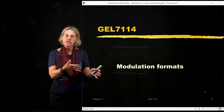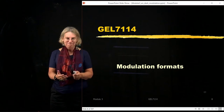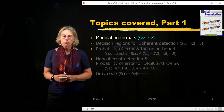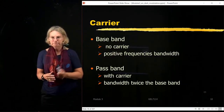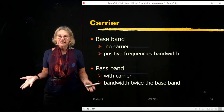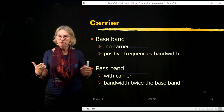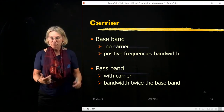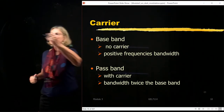We can now launch into our discussion of modulation formats. This is covered in section 4.2 of our textbook. As mentioned previously in the introduction, there are two versions: the baseband version with no carrier, and the passband version with a carrier.